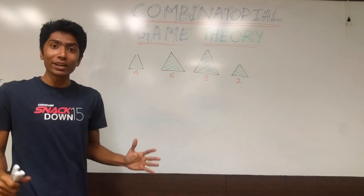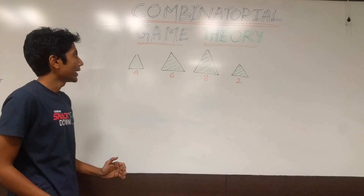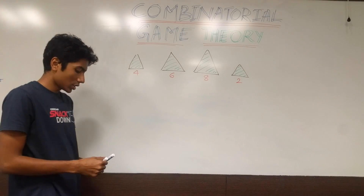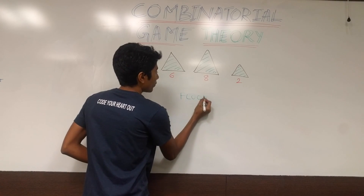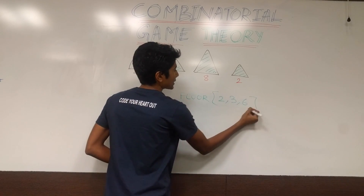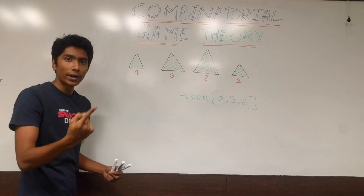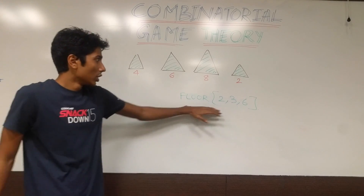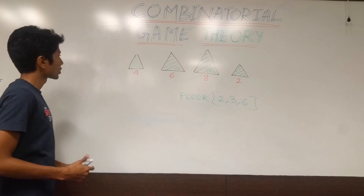Now let's play a NIM game where we have piles of 4, 6, 8, and 2 coins. The allowed operation is: go to a particular pile and replace it with the floor of dividing by 2, 3, or 6. For example, take a pile of 9 and divide by 6 — the pile shrinks to 1. Using these moves, we need to find out who is winning.